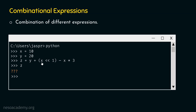So x << 1 is replaced by 20, and we are left with: y + 20 - x * 3. Multiplication has greater precedence than plus and minus, so we perform x * 3 first. x is 10, so 10 * 3 = 30. Now we have: y + 20 - 30.